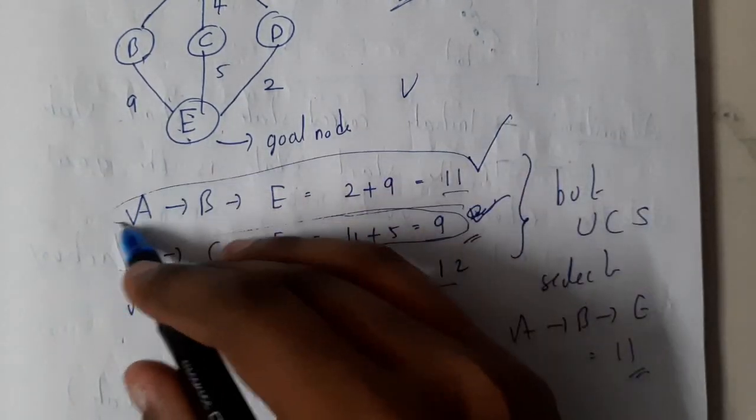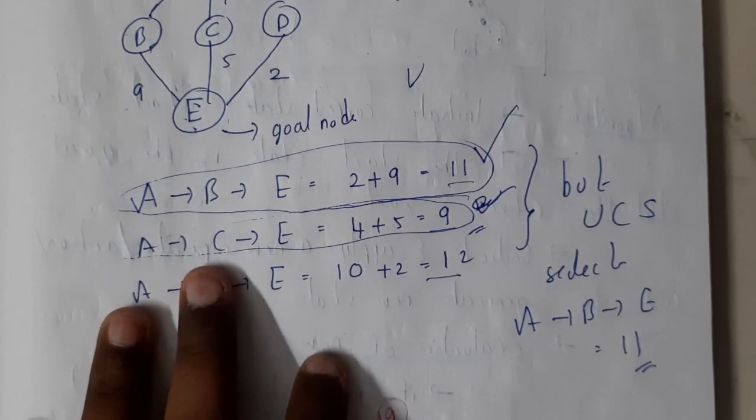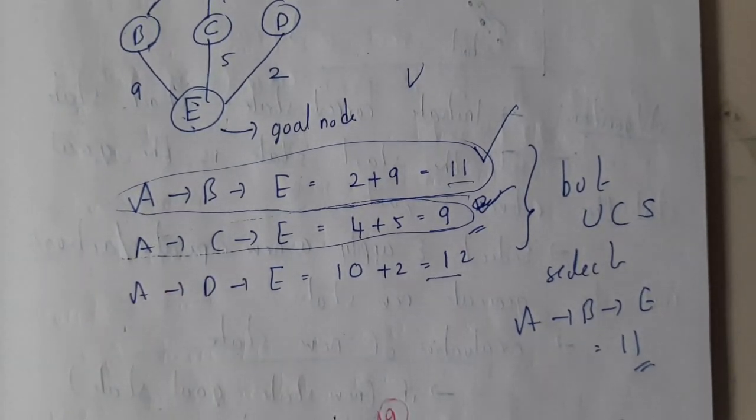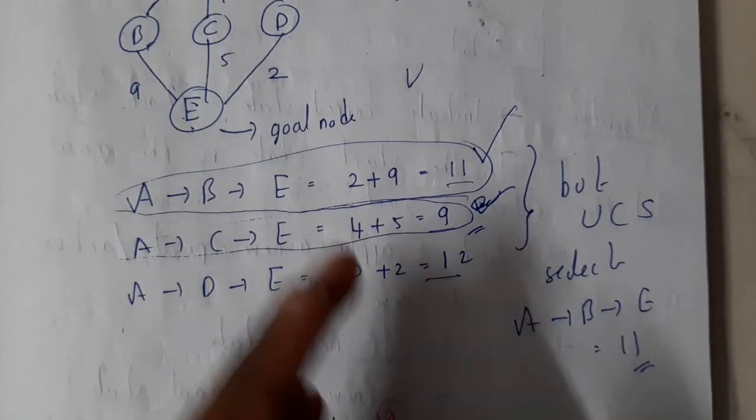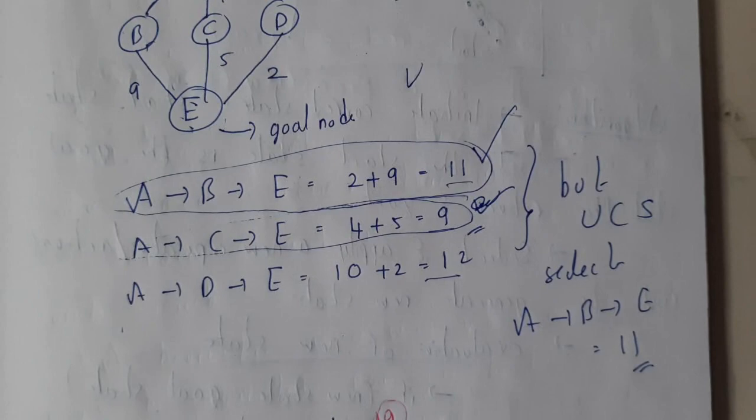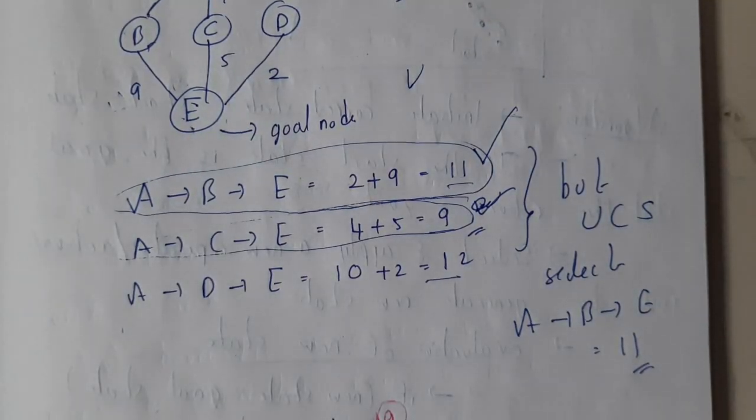This is the path that we will be getting from the uniform cost search, whereas this is the least. So we can say that it is not going to give you the least path overall. It gives you the least way in which you can go like least to least, least, least, but that may be really greater. Let us assume it is 119, so it will be the maximum.